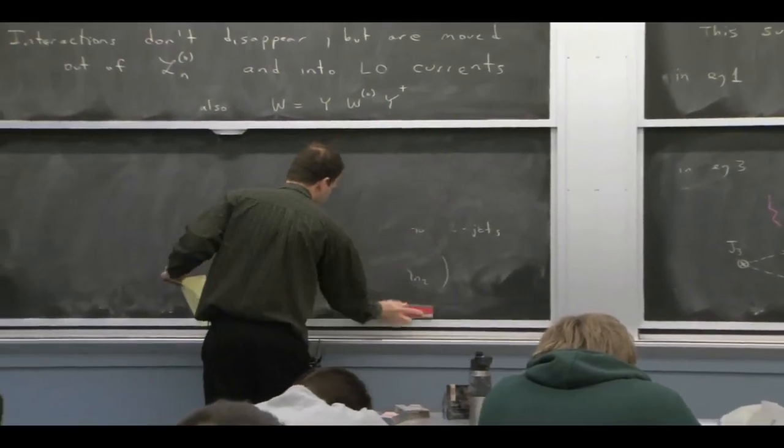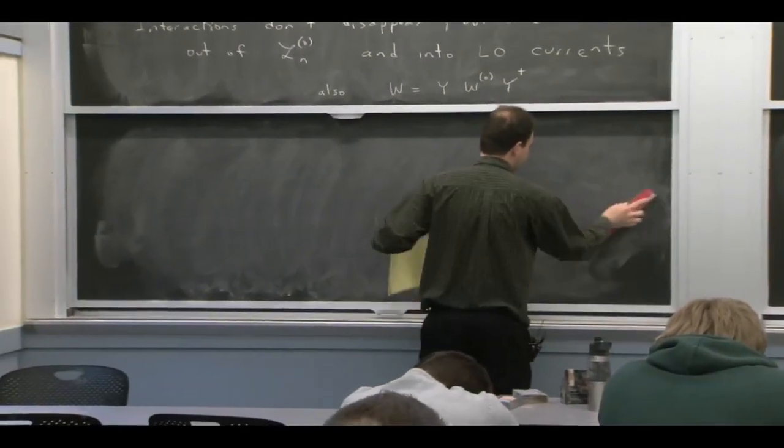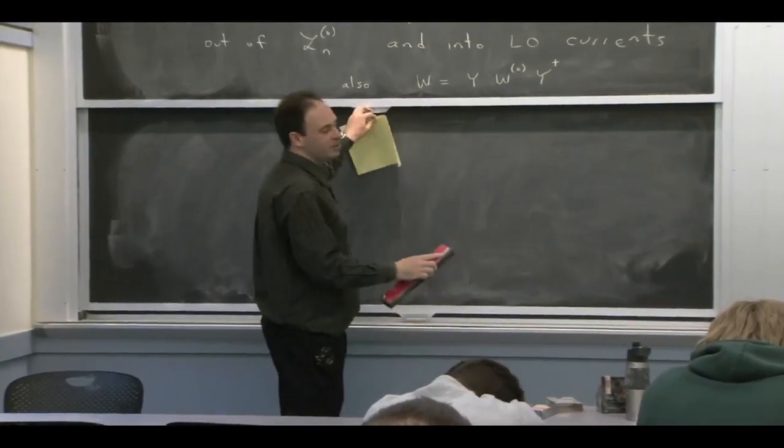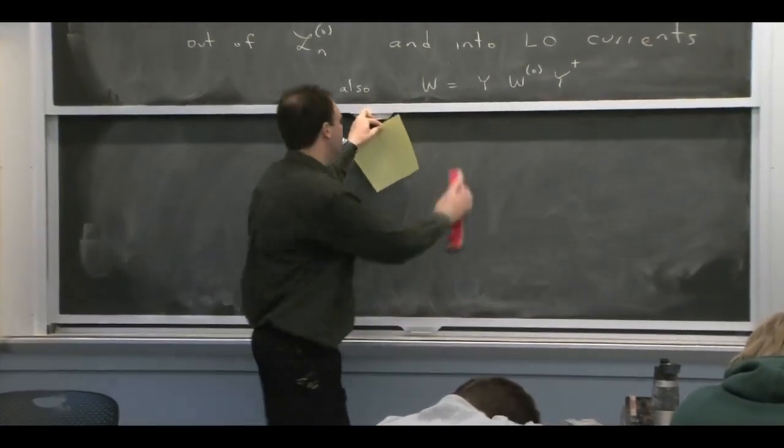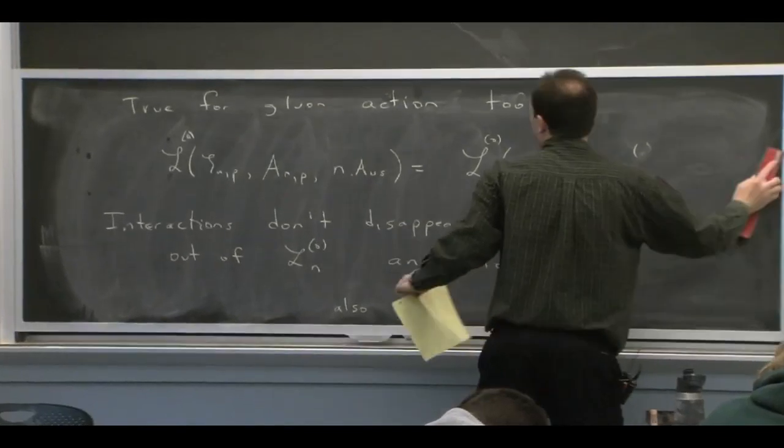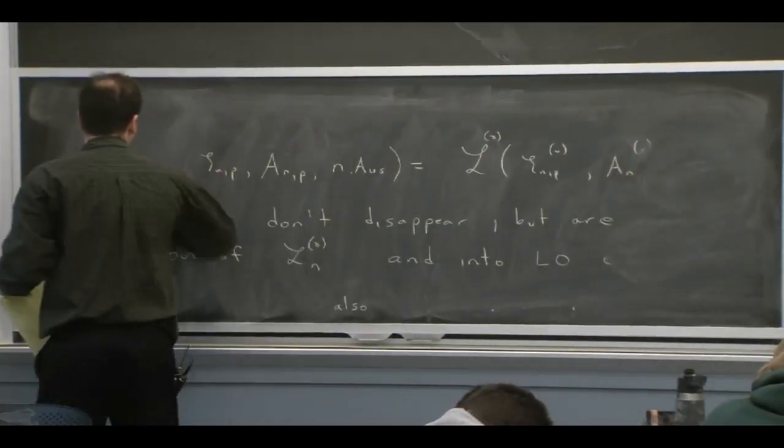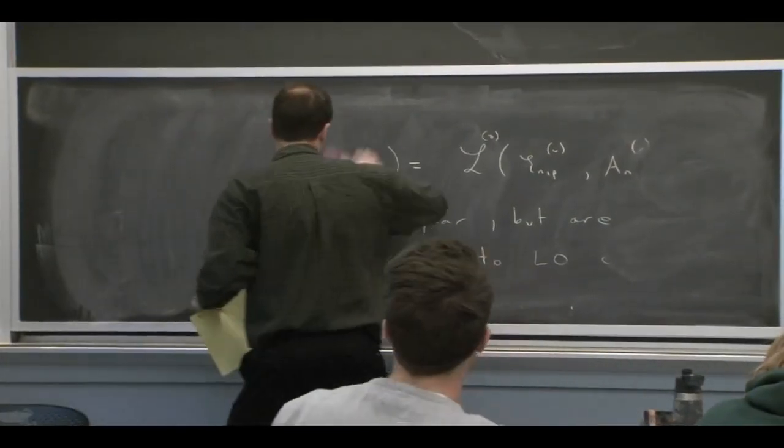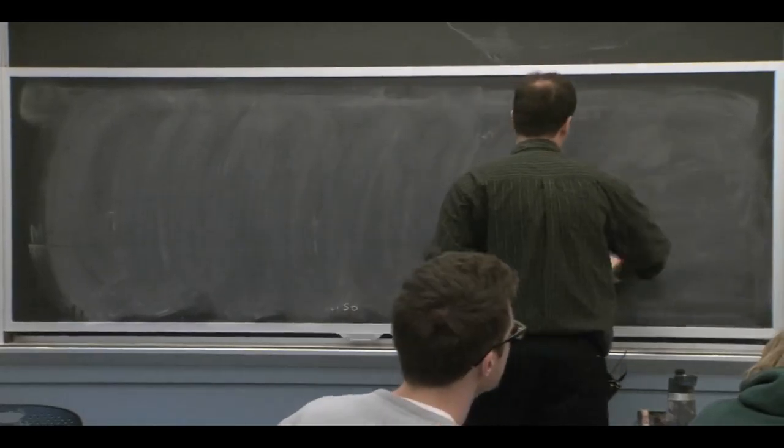So far in our story, we haven't really talked about Wilson coefficients, except to say that they could be constrained by reparameterization and variance to be absent. So let's think about Wilson coefficients now.